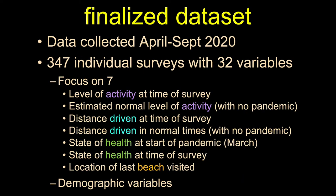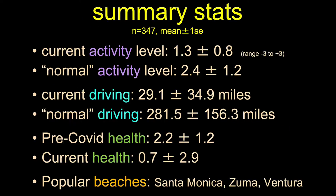The data was collected this year between April and September. I had a total of 347 surveys with 32 variables each, but I'm only going to focus on seven of those variables for my part of our group project. I'm going to look at activity both now and normally, driving distances in the past week — now versus normally — people's health at the start of the pandemic versus when they took the survey, and the beaches that they went to.